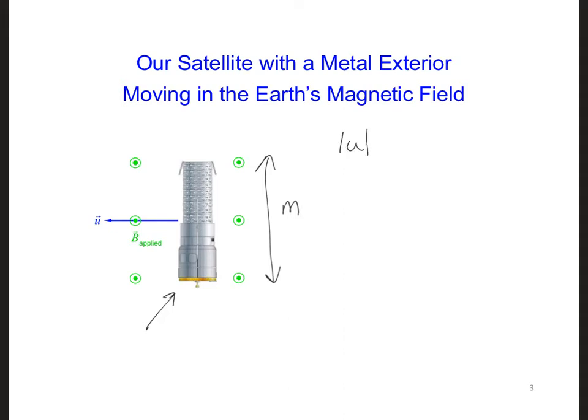U magnitude is 7.8 kilometers per second, and it's moving perpendicularly to the Earth's magnetic field. So B applied here is the Earth's magnetic field, and here the direction of the satellite is indicated.